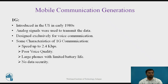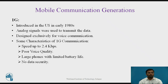Only voice was transferred for communication in 1G. Some characteristics of the first generation: speed up to 2.4 kbps, poor voice quality compared with the next generations 2G, 3G, and 4G. Phones were very large with limited battery life during the 1980s to 1990 period. Data security was also less compared with 2G, 3G, and 4G.